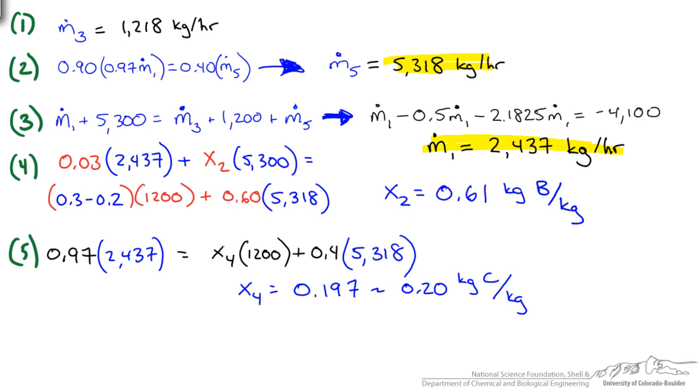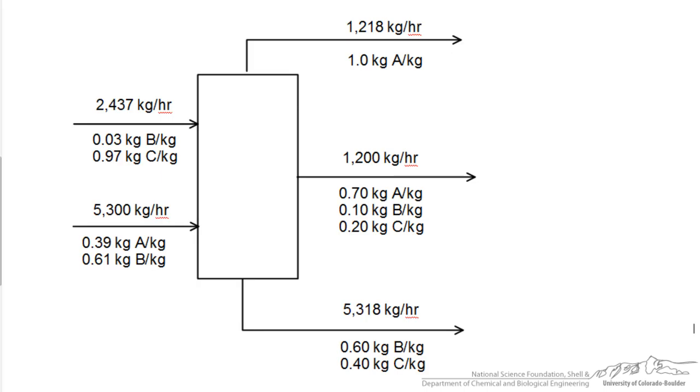So now we have our complete picture of our column. We could place these values back into our schematic to have our final solution. So this should be the final solution to this column with all the proper compositions and stream flow rates. And you can see how important it was to do a degree of freedom analysis at the beginning of this problem because right away we could find out that at least with the information given you wouldn't be able to solve it so we had to provide two more pieces of information in order to do so.